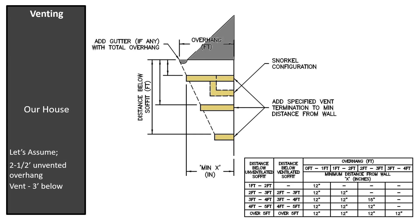Many questions relate to soffits and overhangs. This question is answered in the I&O manual. First, determine how far below the soffit or overhang the vent will be, and how far the soffit or overhang projects from the building. In our example, the soffit is one and a half feet and the vent will be three feet below the unvented soffit or overhang. The vent termination would be 12 inches from the wall.